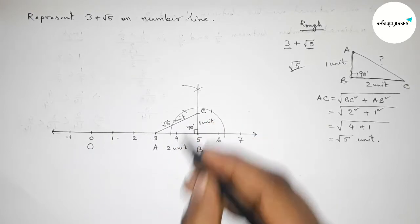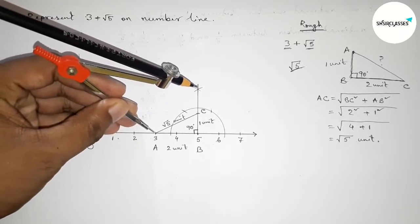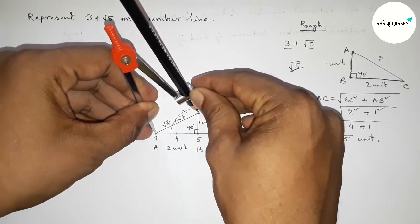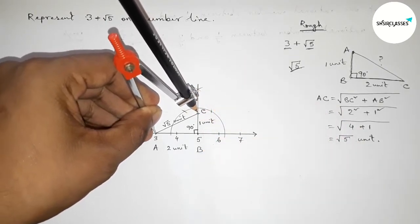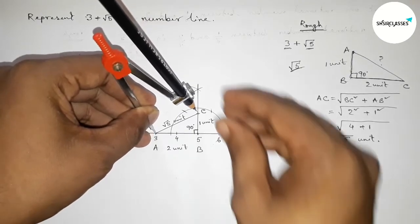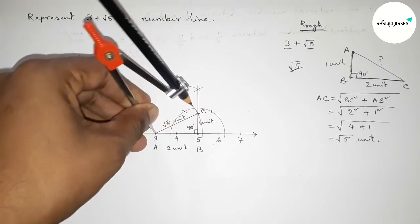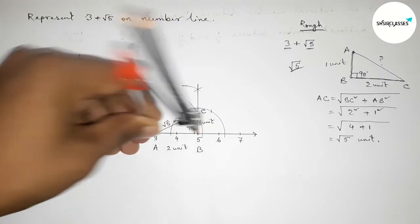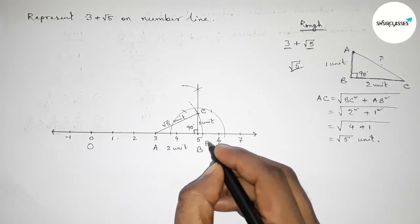Now taking AC by using compass by this way and drawing an arc through point C, which meets the number line here at a point. So the arc meets here at a point, taking point P. So this is 3 plus root 5 on the number line.